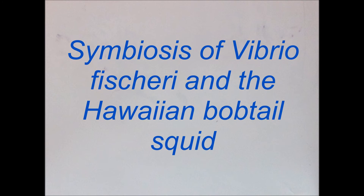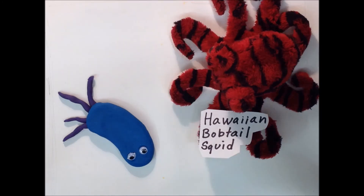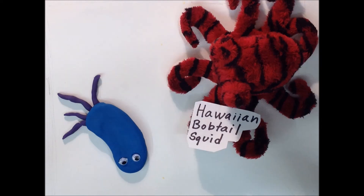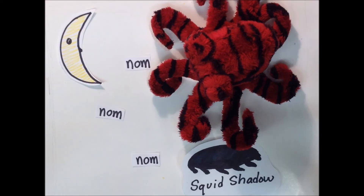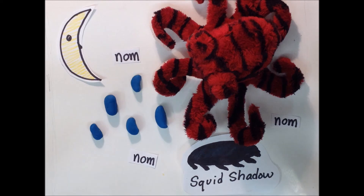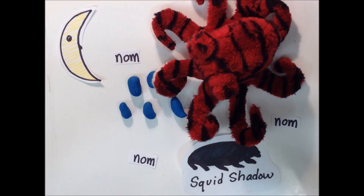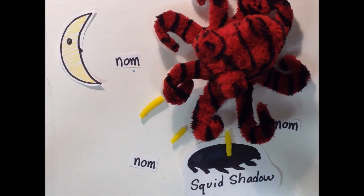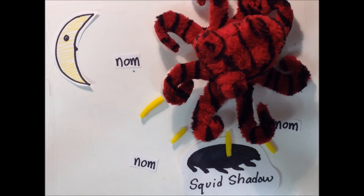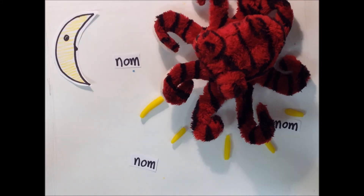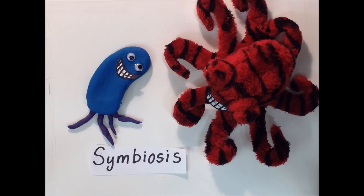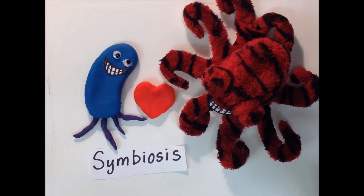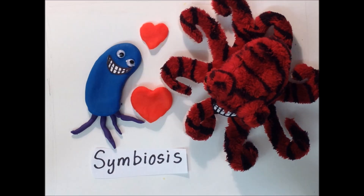Vibrio can be found in seawater and is a symbiont of the Hawaiian bobtail squid. The bobtail squid is a nocturnal forager and has a light organ which is colonized by Vibrio. The bacteria are fed a sugar and amino acid solution by the squid and in return hide the squid's silhouette when viewed by predators from below. Both Vibrio and the squid benefit from this symbiotic relationship.